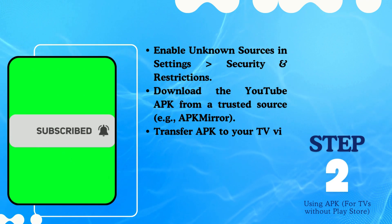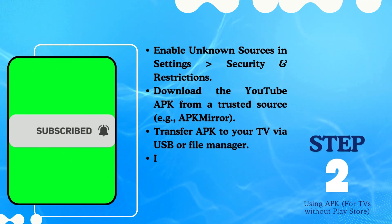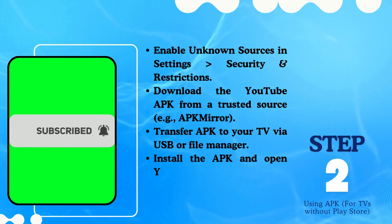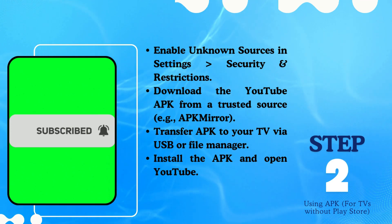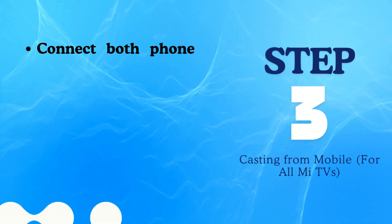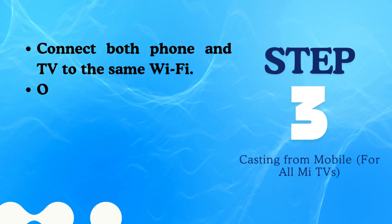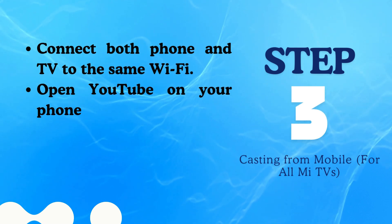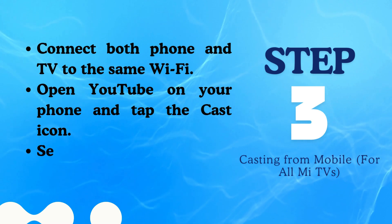For example, APK Mirror. Transfer the APK to your TV via USB or file manager, install the APK, and open YouTube. Method three: casting from mobile, available for all MiTVs. Connect both your phone and TV to the same Wi-Fi, then open YouTube on your phone.